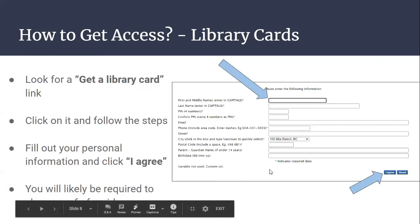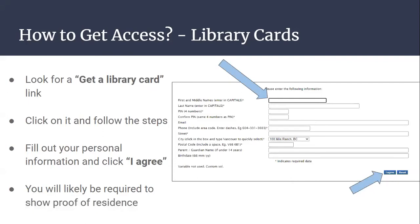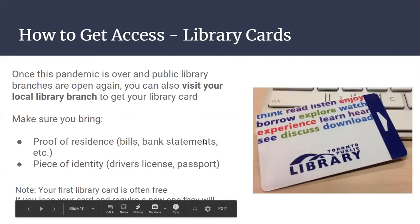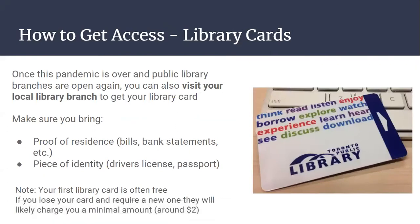You will likely be required to show some proof of residence — they want to make sure that you actually live in the city in which you're applying for a library card. When applying online, they will likely just ask for your phone number so they can use the area code. Once the pandemic is over and public library branches are open again, you can also visit your local library branch in person. Just make sure to bring proof of residence, such as a bill, a bank statement, or any document that has your address and name on it. You should also bring a piece of ID — best is a driver's license or a passport, something with a photo of you and your name.